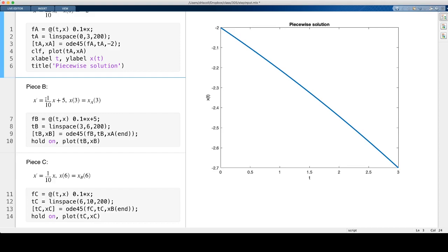All right, in the second piece, now the forcing term is turned on. So I have this plus 5 here. So that reflects, or that has to be reflected in this definition for the differential equation here.